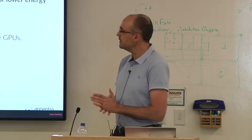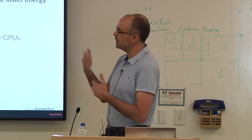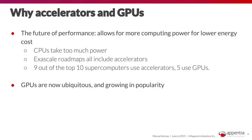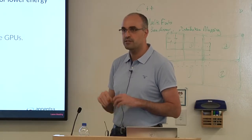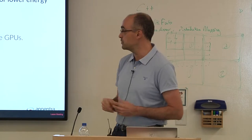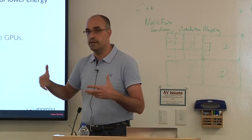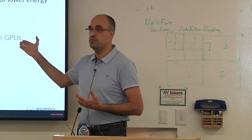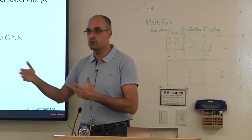Exascale roadmaps for the most powerful supercomputers show that nine out of the ten top supercomputers use accelerators, with five of them using GPUs. If you want to port your code to one of these machines to make big science, you will need to take advantage of GPUs to get resources allocated. Apart from that, GPUs are ubiquitous — even laptops have GPUs — so at some point you will need to port your codes for peak performance.